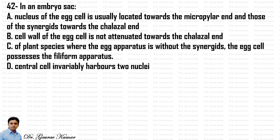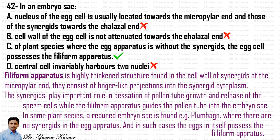In an embryo sac, the correct answer is option C: in plant species where the egg apparatus is without synergids, the egg itself possesses the filiform apparatus. The filiform apparatus is a highly thickened structure found in the cell wall of synergids at the micropylar end, consisting of finger-like projections into the synergid cytoplasm. The synergids play an important role in cessation of pollen tube growth and release of sperm cells, while the filiform apparatus guides the pollen tube into the embryo sac.